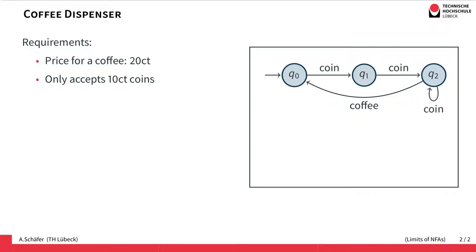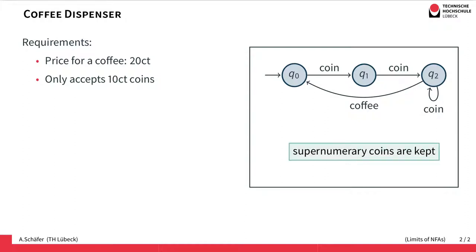So let's consider an alternative — for example, if we add a loop at the state q2, now we can input as many coins as we would like. That's good but mostly for the vendor, because surplus coins are simply kept. There's no internal counter and no change is given.